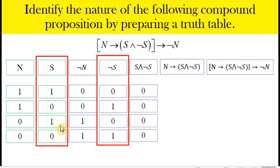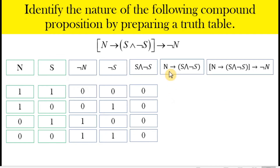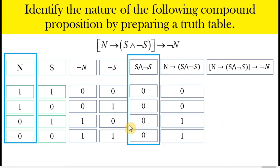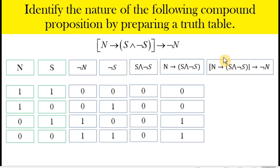Our next column is an implication whose hypothesis is n and whose conclusion is the conjunction of s and not s. For an implication, it is only false if the hypothesis is true but the corresponding conclusion is zero. We see that happens in the first and second rows, so the truth value there is zero, and it is true for the rest of the rows.